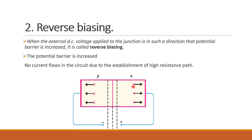During the forward biasing condition only, there will be flow of current. During the reverse bias condition, there will be no flow of current. But due to the minority charge carriers, there will be some leakage current.